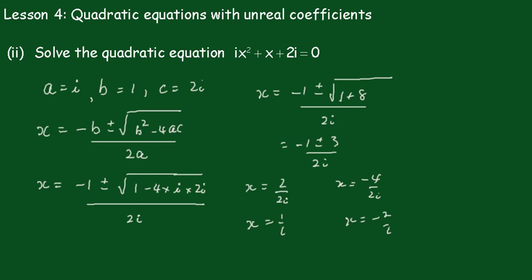What we'll do now is multiply top and bottom by i — i here and i here, and i here and i here. That gives me x equals: this gives a minus 1 on the bottom because it becomes i squared, so it's minus i. And again minus 1 on the bottom changes that to a plus, and x equals 2i. So my solutions are minus i and 2i.